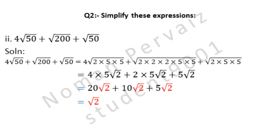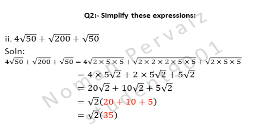Now we take under root 2 as common since it is present in all terms. We write: under root 2 times (20 + 10 + 5). We add 20, 10, and 5 — it becomes 35. So we write 35 first and under root 2 at the end. This is our answer: 35 under root 2.